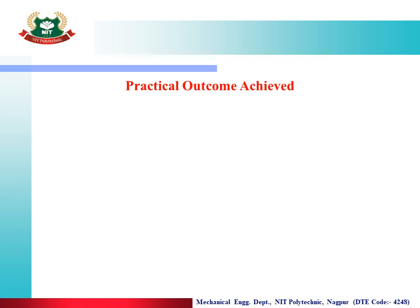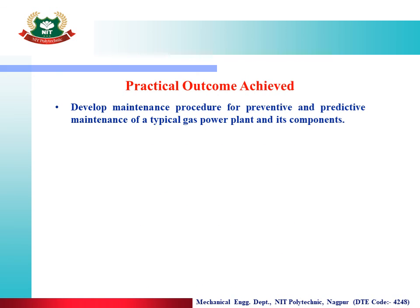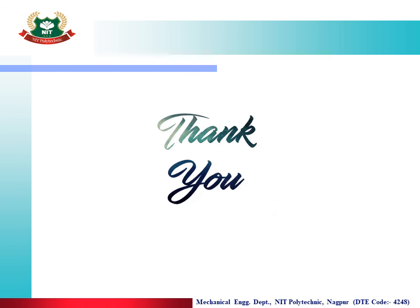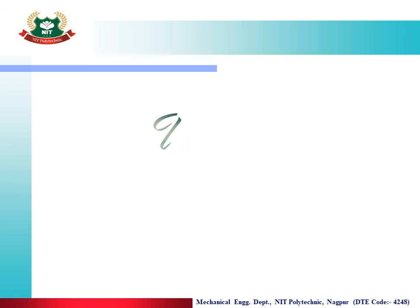The practical outcome achieved by this video lecture is: developing maintenance procedure for preventive and predictive maintenance of a typical gas power plant and its components. Program outcomes achieved by this video lecture are PO1, PO5, PO6, and PO7. Thank you. Happy learning. Stay online.